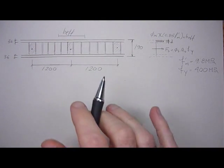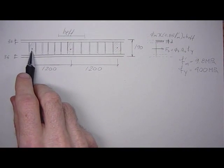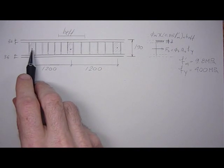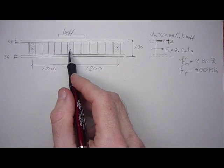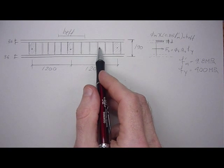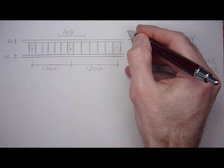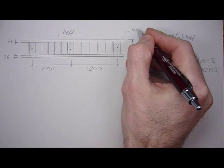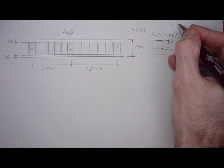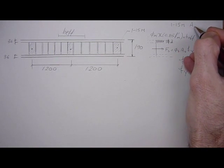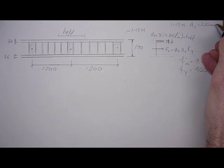So for now we'll concentrate just on the moment resistance. We've got 15M bars at 1,200 on centers. These are the grouted cores. These are void cores, hollow cores in here. So every core is 200, 400, 600, 800, 1,000, 1,200. So we have a 15M bar at every grouted core. And the 15M has an area of steel of 200 mm².